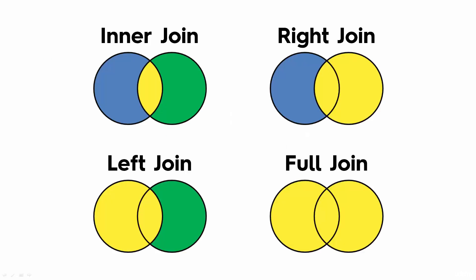To quickly recap, we looked at four different joins: the inner join, which only keeps matching rows; the left join, which keeps the left table as primary; the right join, which keeps the right table as primary; and the full outer join, which does not discard any rows from either table.